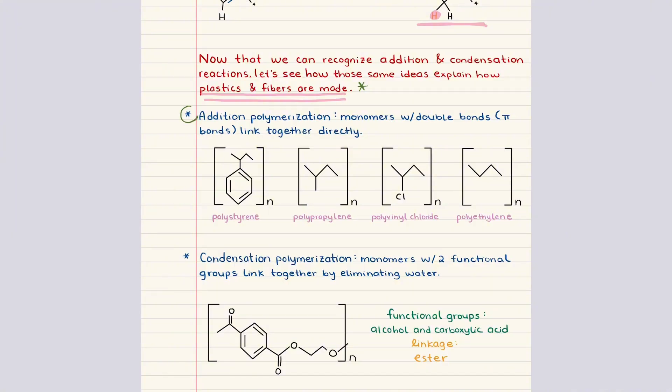We begin with addition polymerization, which applies directly to what we already learned about addition reactions. In this type of polymerization, the monomers contain double bonds. Those double bonds are the source of the pi electrons that allow the chain to grow. When the pi bond breaks, each carbon forms a new single bond that connects to the next monomer, and this repeats over and over, making a long chain without producing any byproducts.